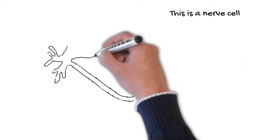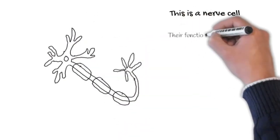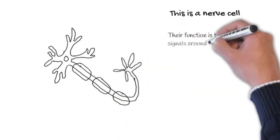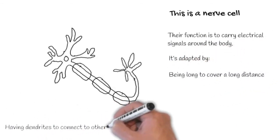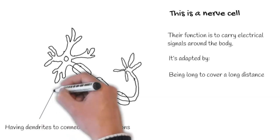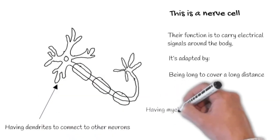Here is a nerve cell. Its function is to carry electrical signals around the body to allow us to respond to our environment. It is adapted by being long to cover a long distance. It has dendrites to connect to other neurons.